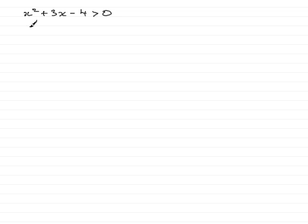OK, so we've got to solve this quadratic inequality: x squared plus 3x minus 4 is greater than zero. Now the first thing you've got to do is factorize it. And assuming it does factorize, and this one does, it will be two brackets.